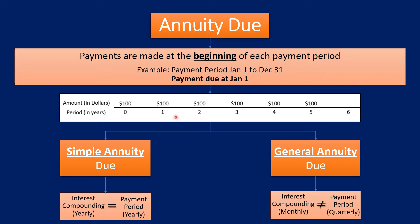There are two types of annuity dues: simple annuity due and general annuity due. In a simple annuity due, which is the topic of this video, the interest compounding frequency and the payment period frequency are the same. So if the interest compounding frequency is yearly, the payment period frequency is also yearly; if the payment frequency is monthly, interest compounding is monthly.